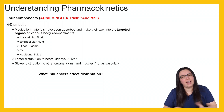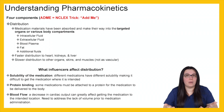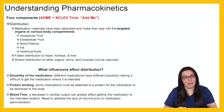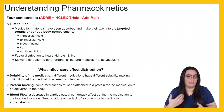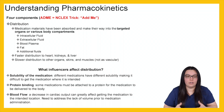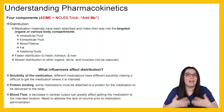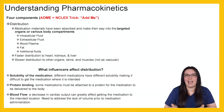What influences affect distribution? First, solubility of the medication — different medications have different solubility, making it difficult for the medication to reach its intended destination. Protein binding is a big one — some medications must be attached to a protein for delivery throughout the body. Blood flow is also important — a decrease in cardiac output can greatly affect getting the medication to the intended location. We need to address a lack of volume prior to giving a medication. If there is hypovolemia, the medication won't get to where it needs to be as quickly because it doesn't have the fluid to get it there.